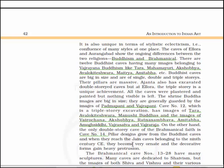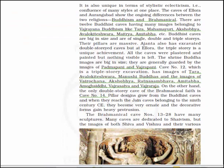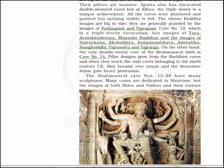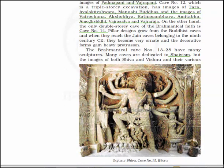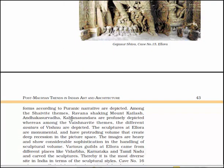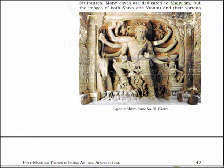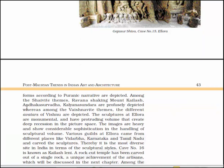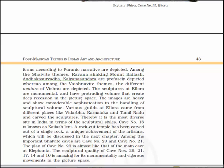The Brahminical cave numbers 13 to 28 have many sculptures; many caves are dedicated to Shaivism, but images of both Shiva and Vishnu and their various forms according to Puranic narratives are depicted. Here you will see Gajasura Shiva in cave number 15 of Elora. Among the Shaivite themes, Ravana shaking Mount Kailas, Andhakasurvadha and Kalyana Sundara are profusely depicted. Among the Vaishnava themes, the different avatars of Vishnu are depicted. The sculptures at Elora are monumental and have protruding volumes that create depth in the picture space. The images are heavy and show considerable sophistication in handling sculptural volumes.